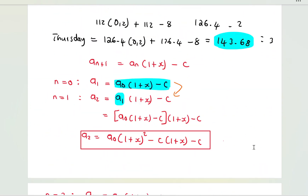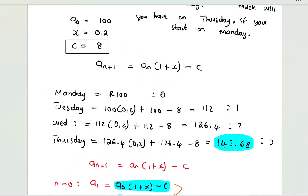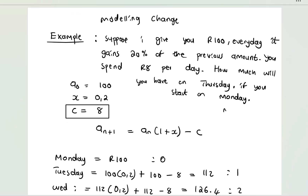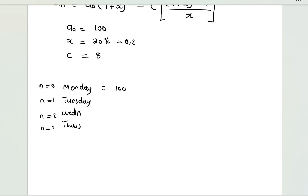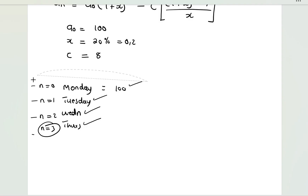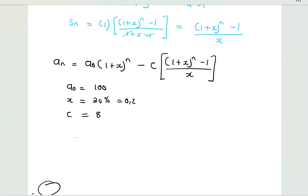It's important to notice that we started on Monday at n = 0, Tuesday at n = 1, Wednesday at n = 2, and Thursday at n = 3. Thursday is the 4th day of the week, but we are indexing from 0, so we move 0, 1, 2, 3 steps. To calculate how much we have on Thursday, we use n = 3, not n = 4.